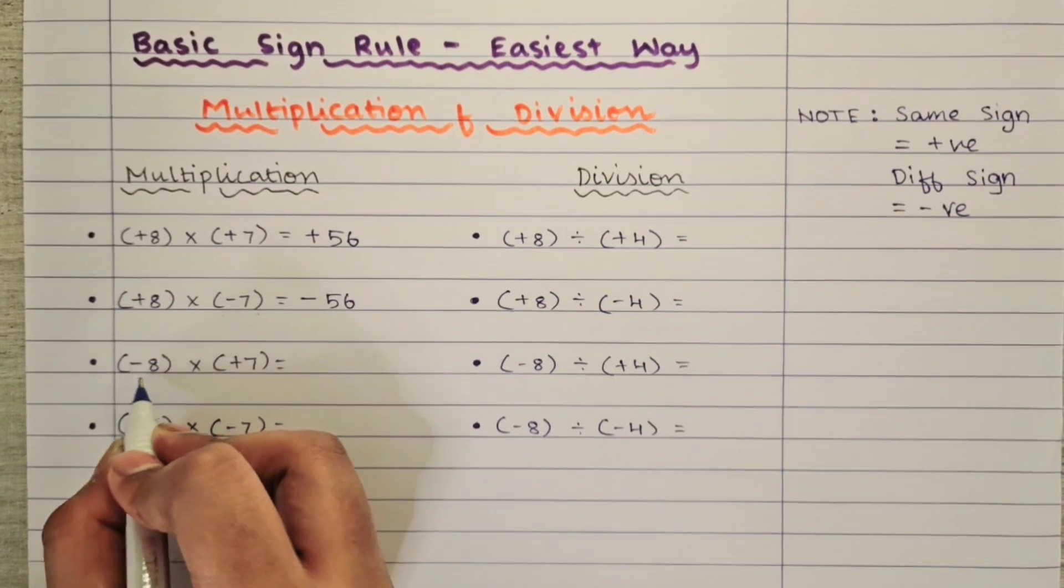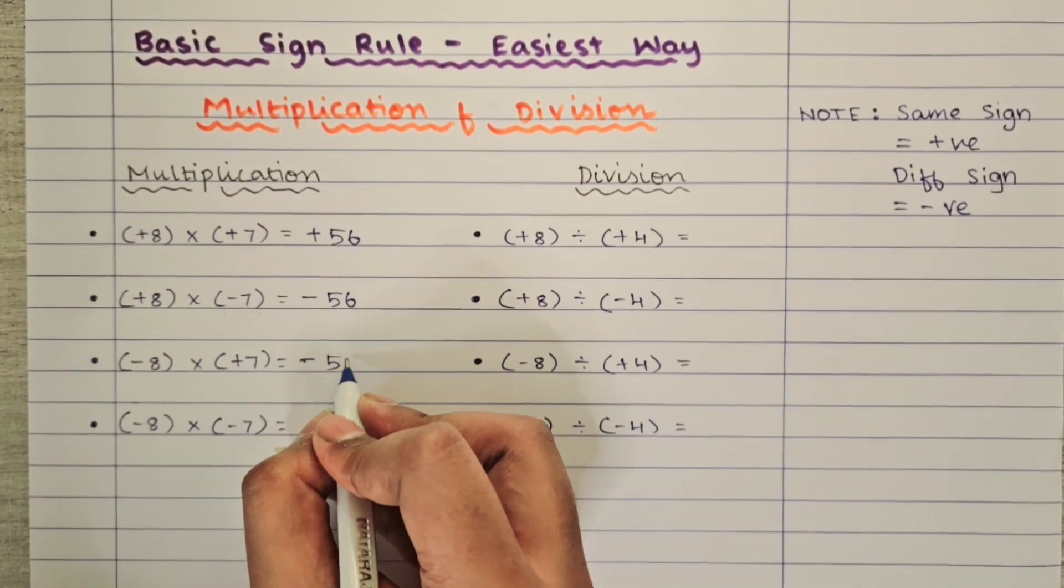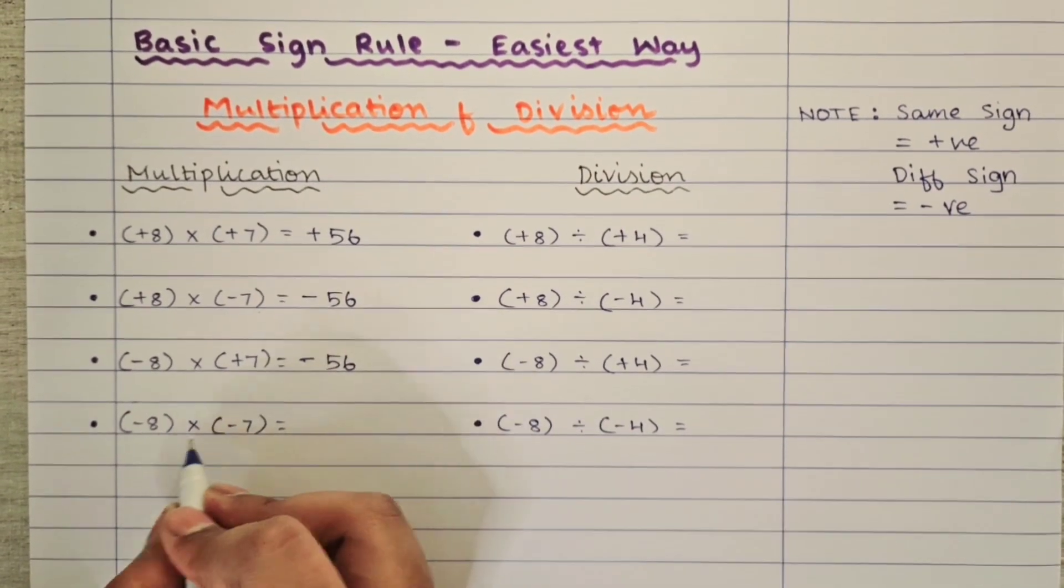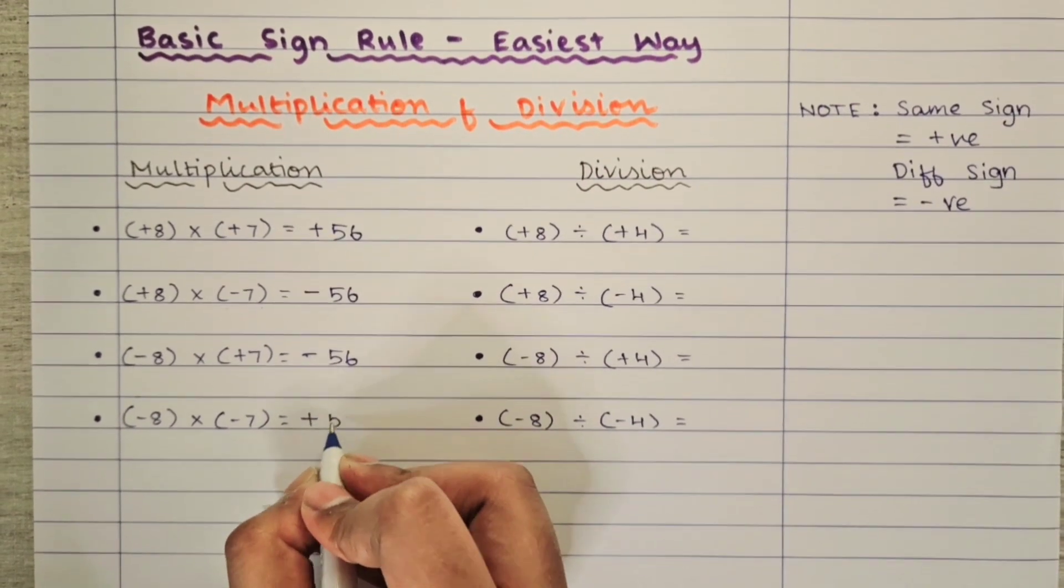Next minus 8 into plus 7. Different sign, so minus 56. Next, minus 8 into minus 7. Both have the same sign, so plus 56.